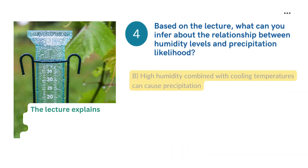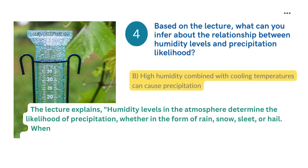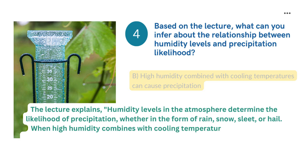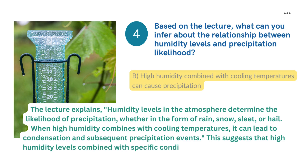Answer 4: The lecture explains that humidity levels in the atmosphere determine the likelihood of precipitation, whether in the form of rain, snow, sleet, or hail. When high humidity combines with cooling temperatures, it can lead to condensation and subsequent precipitation events. This suggests that high humidity levels combined with specific conditions can lead to precipitation.